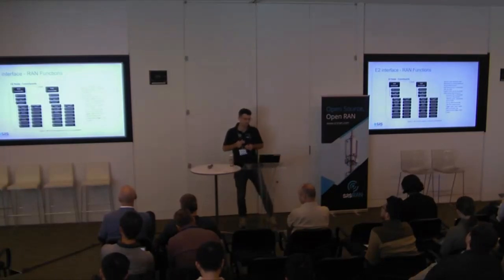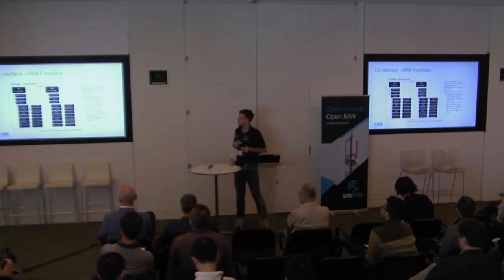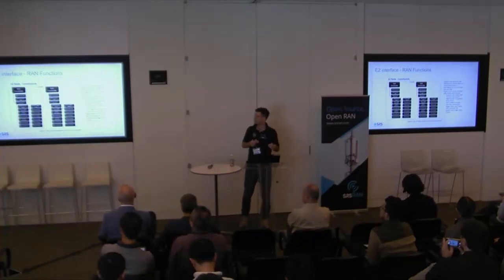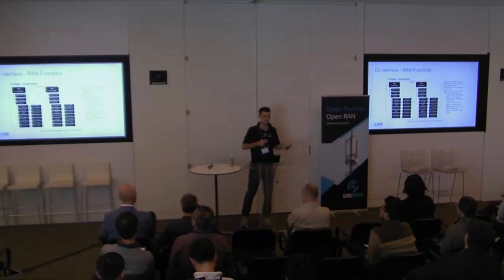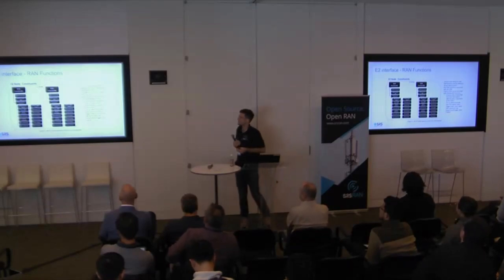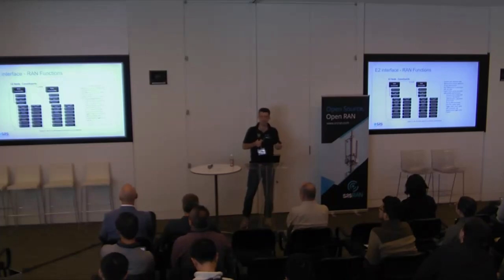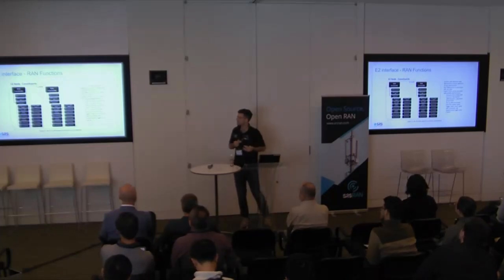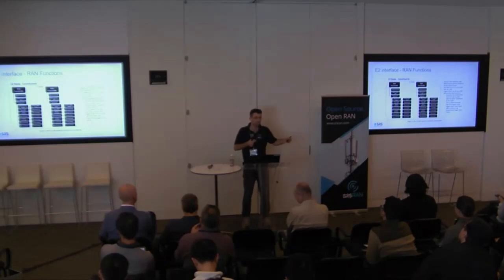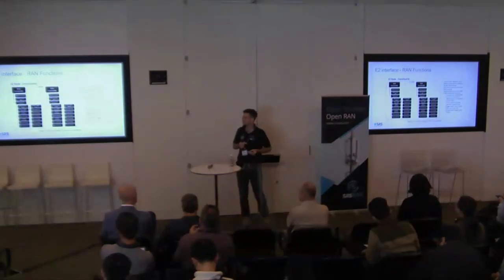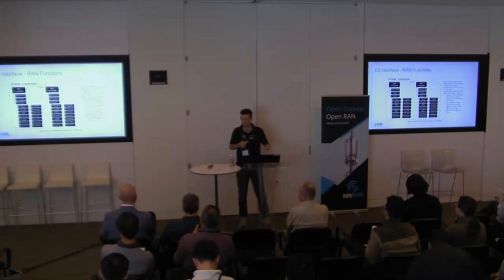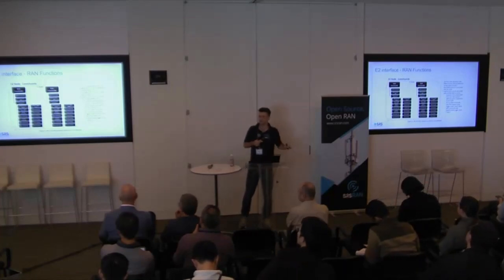The way an E2 interface is set up with a RIC is that it defines its capabilities to the RIC using the RAN function. These service models are huge and provide a wide range of functionality that could never be totally supported by any one RAN. The RAN function definition lets your specific E2 agent tell the RIC what's possible in this particular RAN. You'll have a RAN function for each service model, and this will declare, for example, that we support the KPM model, support the report service, and support just these 10 metrics — telling the RIC not to ask for anything else.